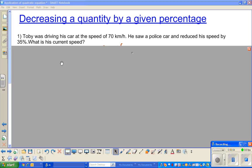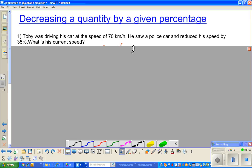In this video, I'm going to do probably two examples on decreasing by a given quantity. I've taken one simple example. Toby was driving his car at the speed of 70 kph. He saw a police car and reduced his speed by 35%. What is his current speed?